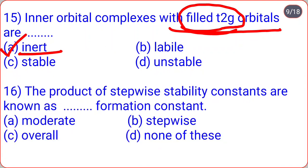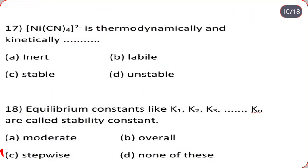The product of stepwise stability constants is known as the overall formation constant — correct option C. Ni(CN)4²⁻ is thermodynamically and kinetically labile.